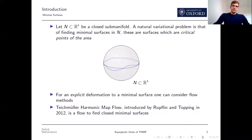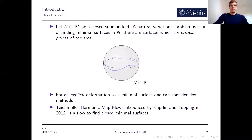What I do is geometric flows, and I'm concerned with finding an explicit deformation to a minimal surface. There are many ways you can do this, but today I'm going to be talking about the Teichmuller harmonic map flow, a gradient flow designed to find closed minimal surfaces in a target manifold. This flow was introduced by Ruppfin and Topping in 2012. Finding minimal surfaces is a very important problem in geometry, with applications to topology, mathematical physics, and so on.